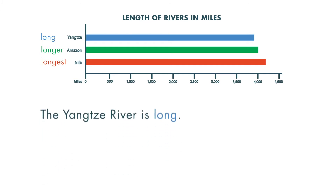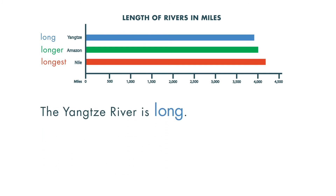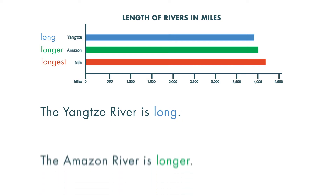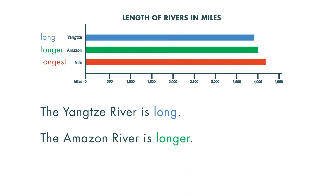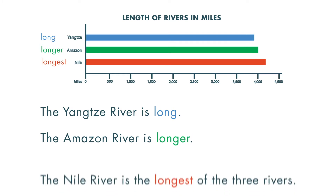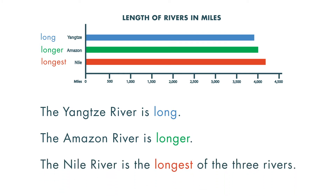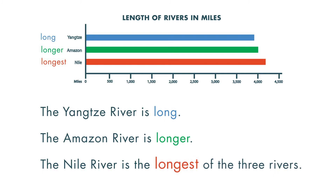This graph shows that the Yangtze River is long. Long is an adjective. When comparing two things, we add ER to the adjective. The Amazon River is longer than the Yangtze River. If we compare more than two things, we add EST. The Nile River is the longest of the three rivers.